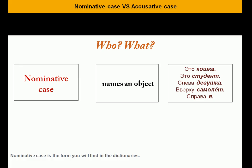First we'll take a look at the nominative case. The nominative case is the form that you will find in the dictionary, so it's very simple. One of the purposes it serves is it names an object. So if you want to say 'this is a cat' or 'this is a student,' you would say: это кошка — it's a cat; это студент — it's a student.